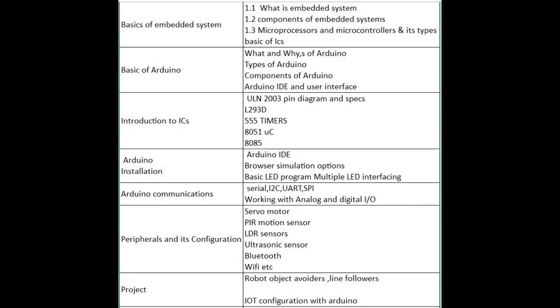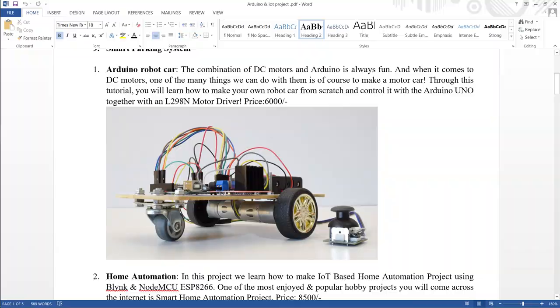Let's wrap up this video and look at the course content. Topics include: basics of embedded systems, introduction to Arduino, introduction to ICs, Arduino installation, Arduino communication, peripheral configuration, and finally projects — because practical implementation is very important to enhance your skills. Some Arduino IoT projects covered include an Arduino robot car, home automation, and a temperature and humidity monitor.